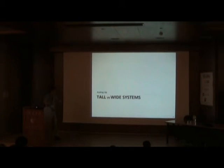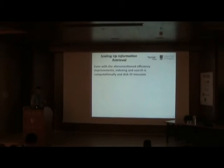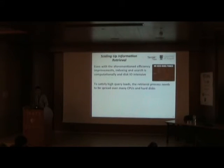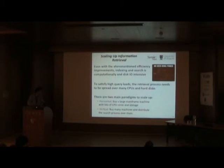The more things you add to your search engine, the slower it might become, so I'll talk about scaling up the retrieval system — either adding more machines or adding more processing power. Search is computationally and I/O intensive, and we may not have enough power. To satisfy high query loads, the retrieval process can be spread over many CPUs and storage backends. There are two ways to scale: horizontally, buying a large machine with lots of storage; or vertically — the common search approach — buying many machines and distributing search processes over them. Horizontal scaling, also called scale-out, has disadvantages in fault tolerance and expensive infrastructure, while vertical scaling (scale-out with many machines) allows adding machines ad-hoc but incurs additional communication and coordination overhead.